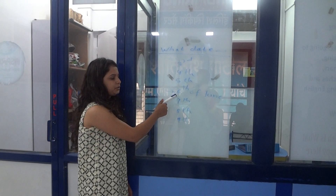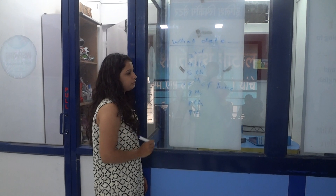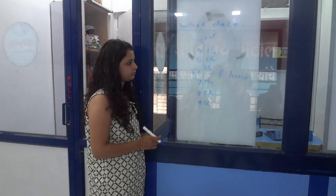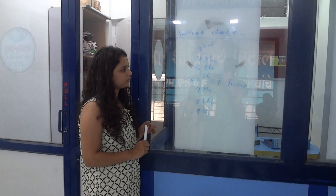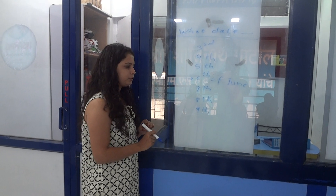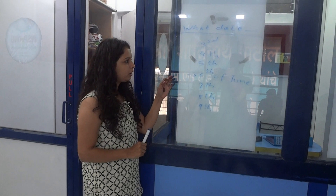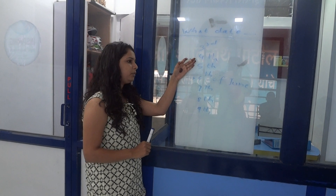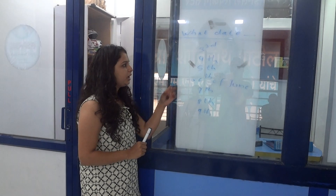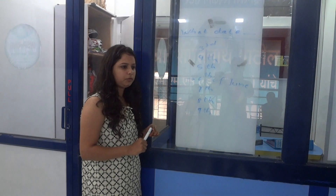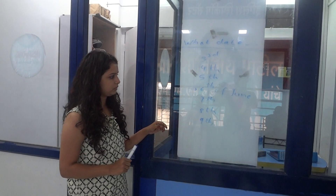What date is today? It is 6th of June today. What date was yesterday? It was 5th of June yesterday. What date was the day before yesterday? It was 4th of June the day before yesterday.